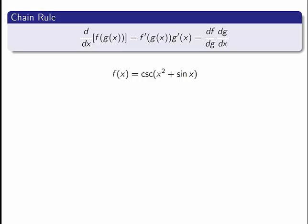So here's an idea. My function is the cosecant of x squared plus sine x. I know how to differentiate cosecant of x, but I'm not so sure how to differentiate cosecant of this function. But I notice it's a compound function. I can just use the chain rule.